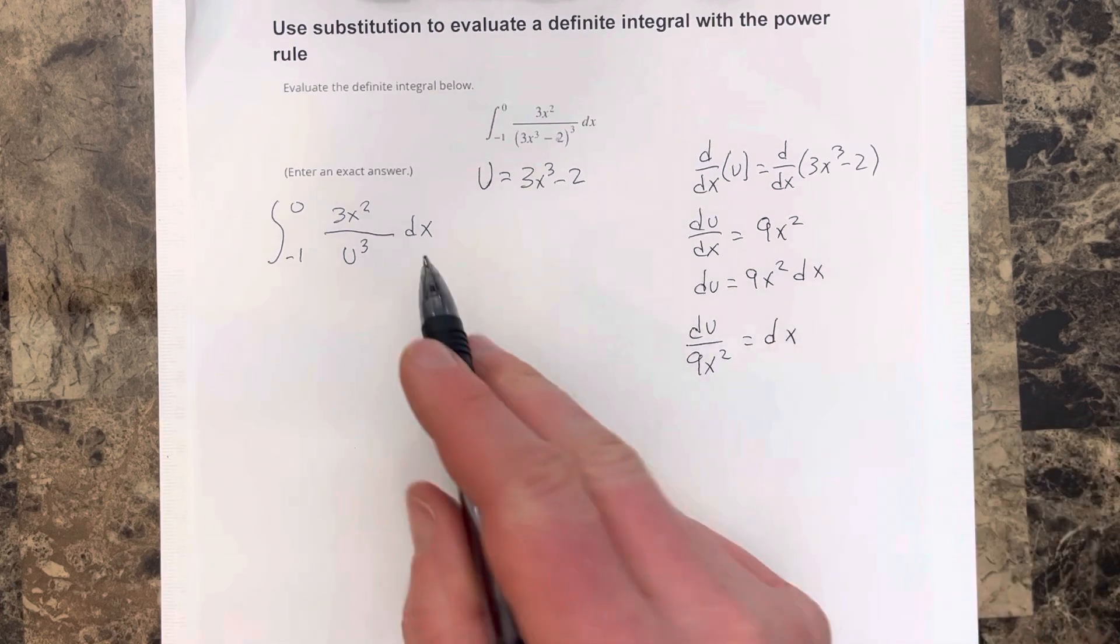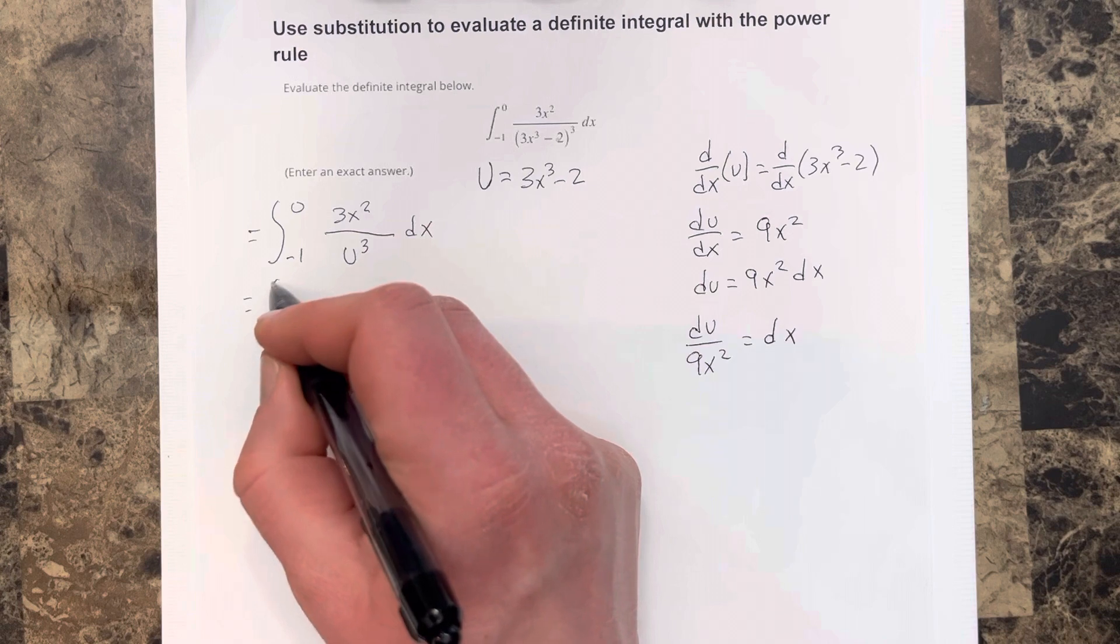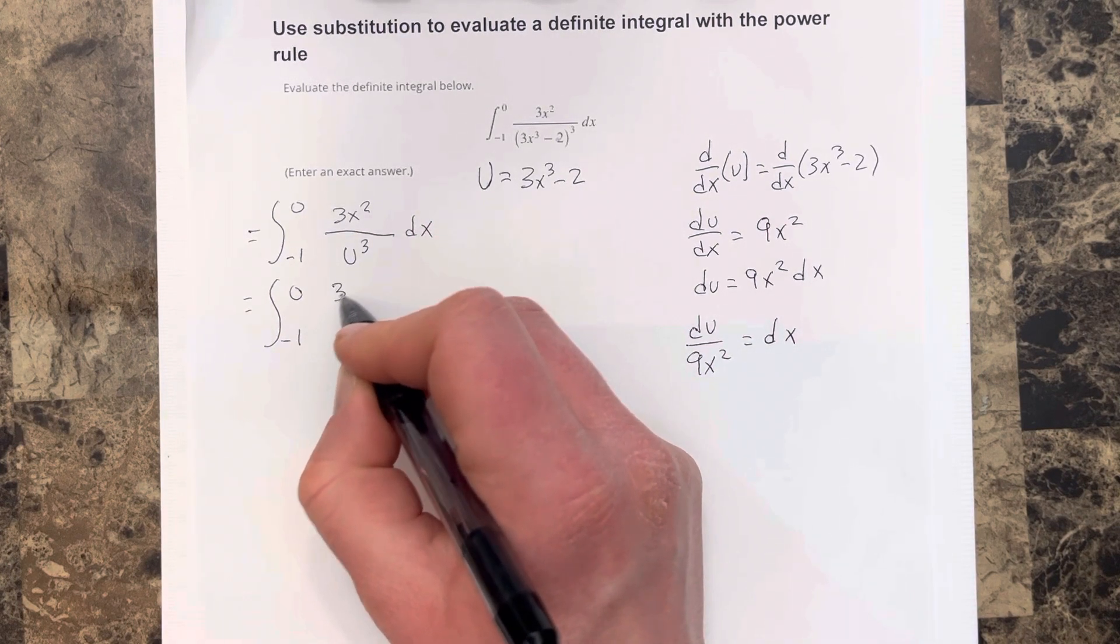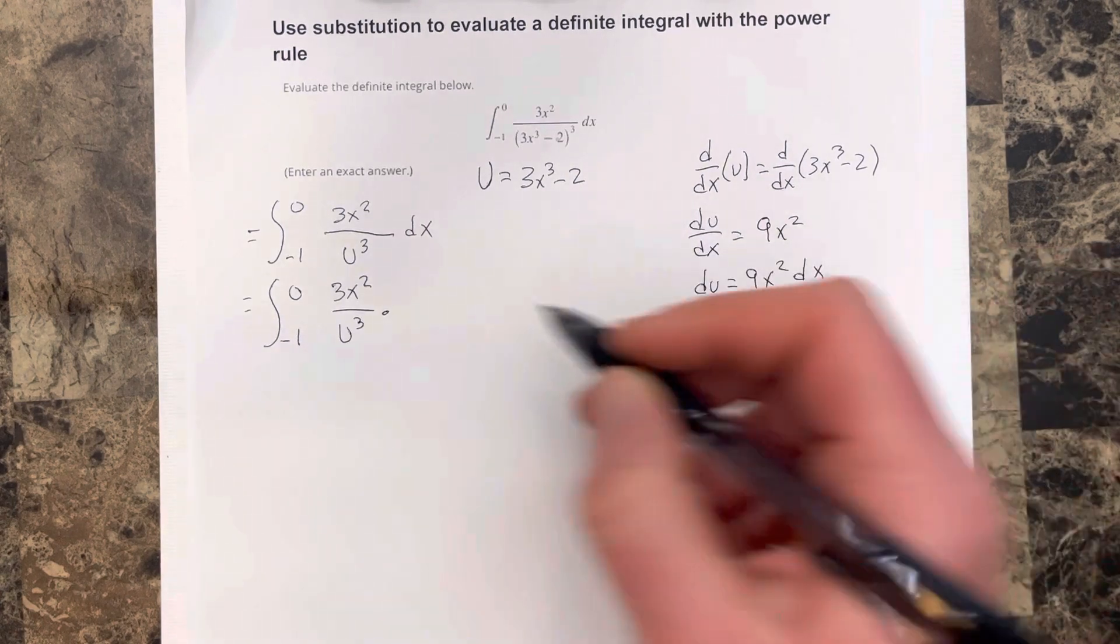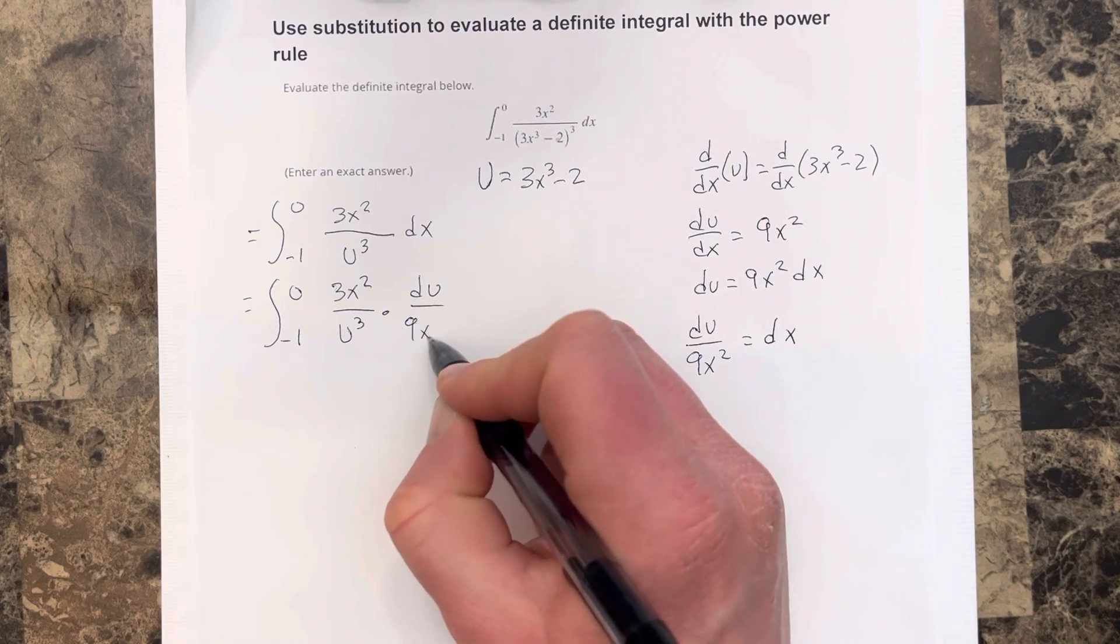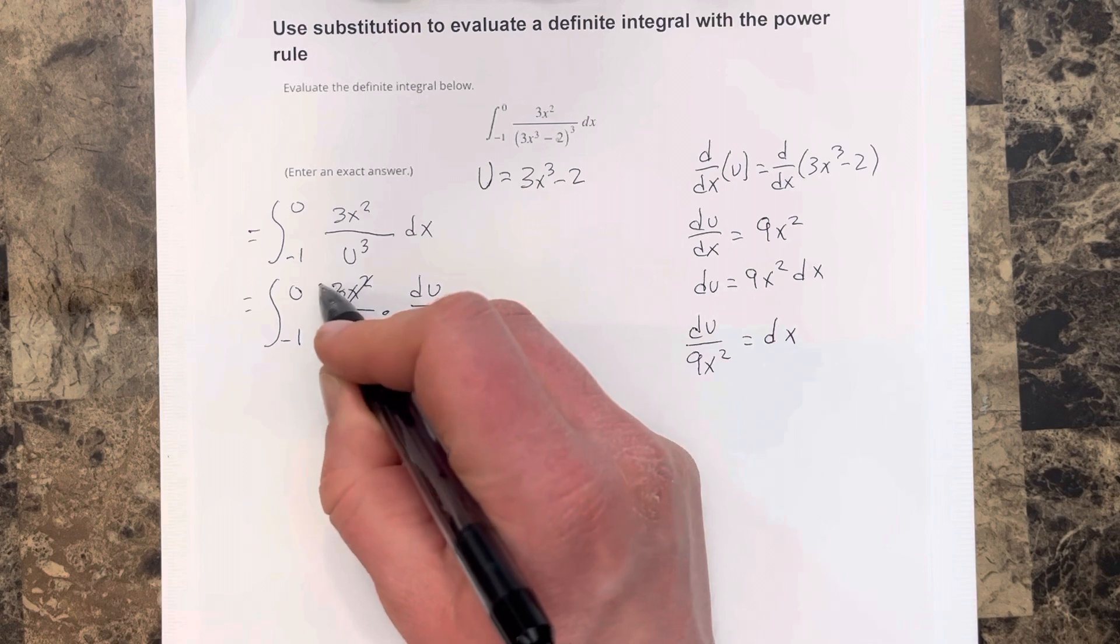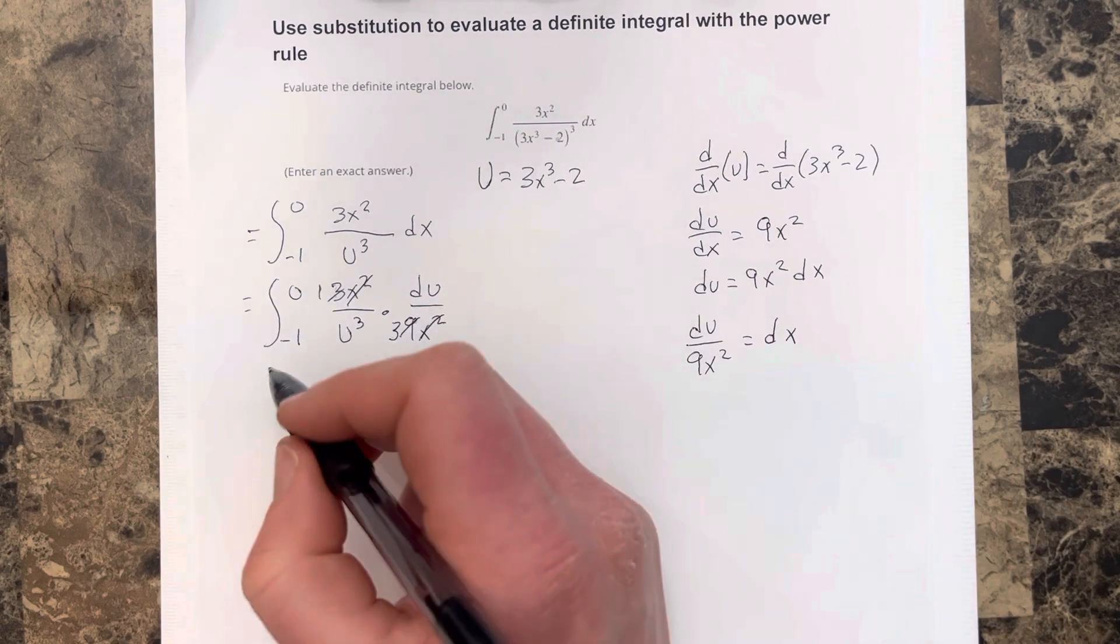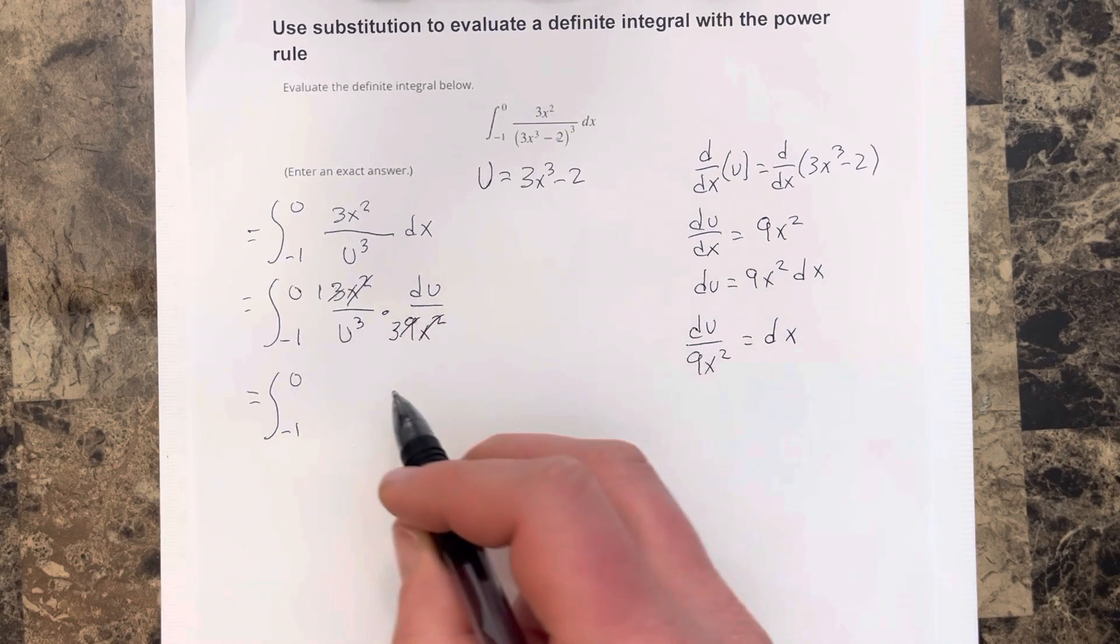Let's re-substitute for dx into this equation. So I get integral negative 1 to 0. This would be 3x squared over u cubed times du over 9x squared. You can see that the 9x squareds are going to cancel, and the 3 would cancel to be a 1, the 9 would cancel to be a 3. So you would end up with the integral from negative 1 to 0 of 1 third.